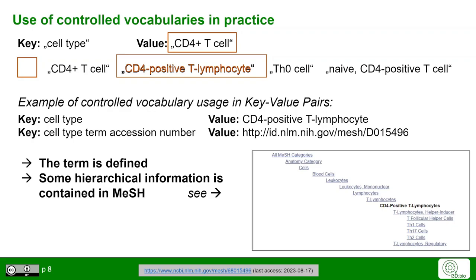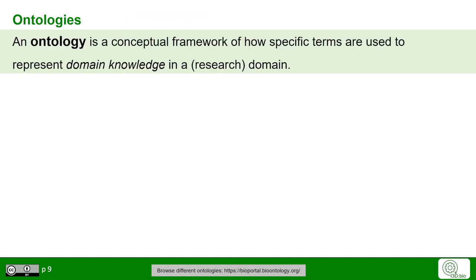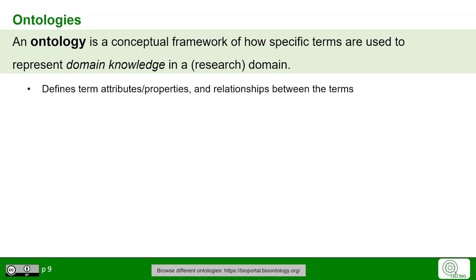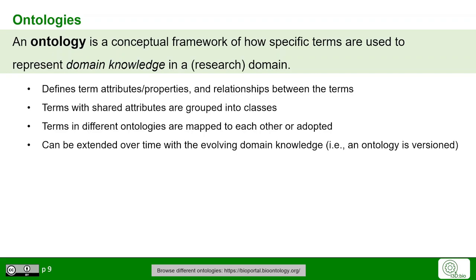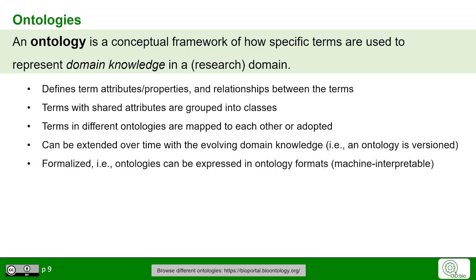The term is clearly defined and there is some hierarchical information in MeSH. However, more attributes, properties, or relationships among terms are not given — this is provided by ontologies. An ontology is a conceptual framework of how specific terms represent domain knowledge in a specific research domain. On top of definitions and IDs, terms have different attributes and properties, and there are relationships defined between terms and their classes. An ontology is not static; it evolves with domain knowledge and is typically versioned. Importantly, an ontology is a formalized, machine-interpretable knowledge representation expressed in a specific ontology format.